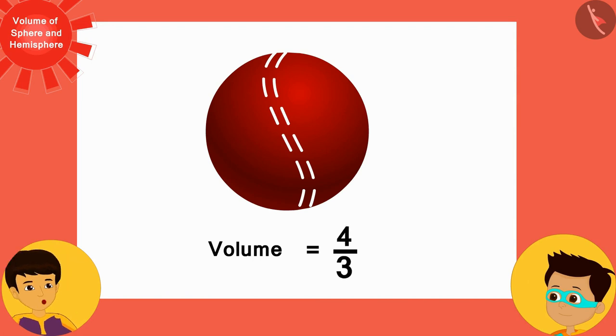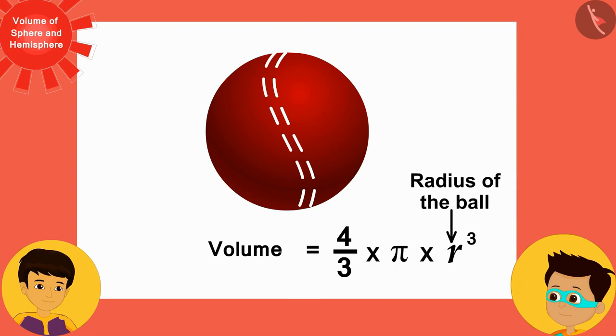4/3 pi and the cube of the radius of the ball. If we assume that the radius of a spherical ball is r, then we can write the formula of volume of sphere in this way.